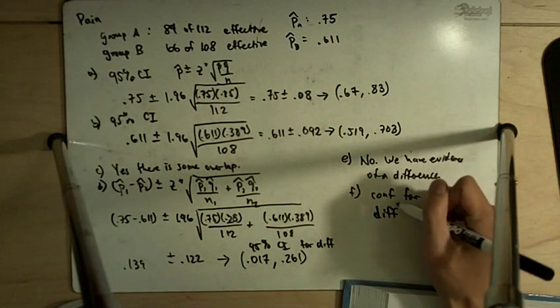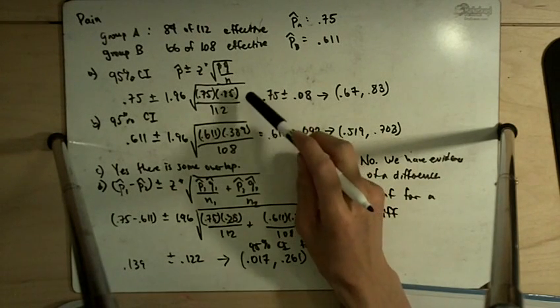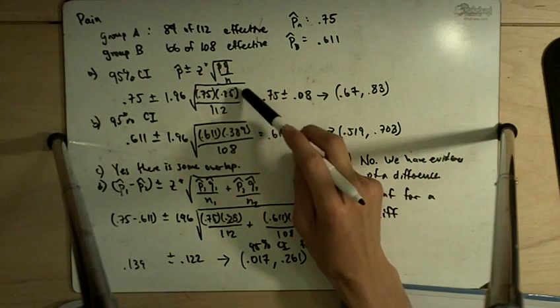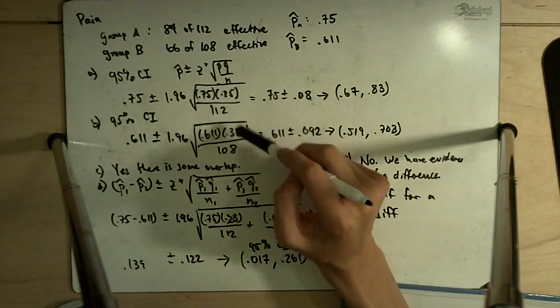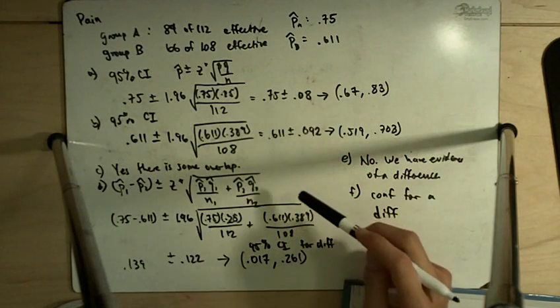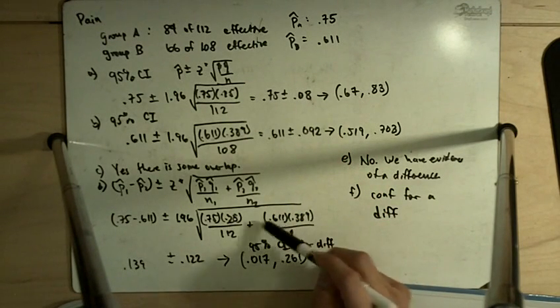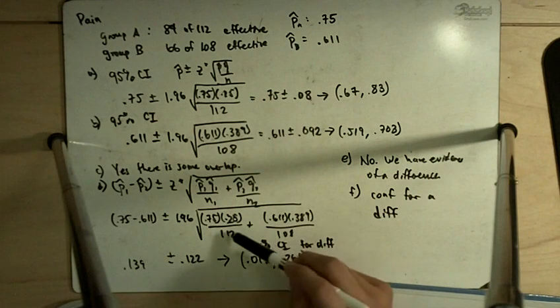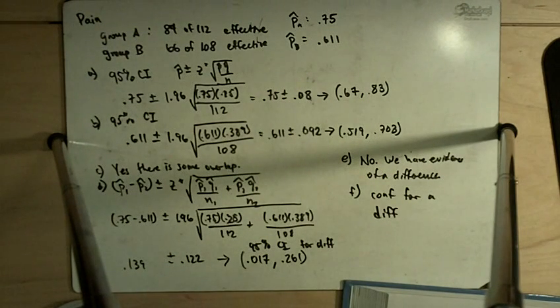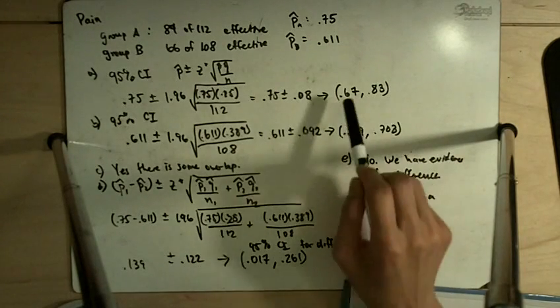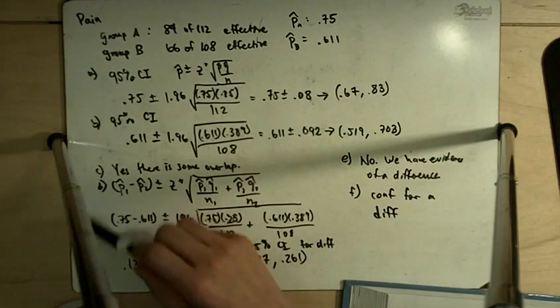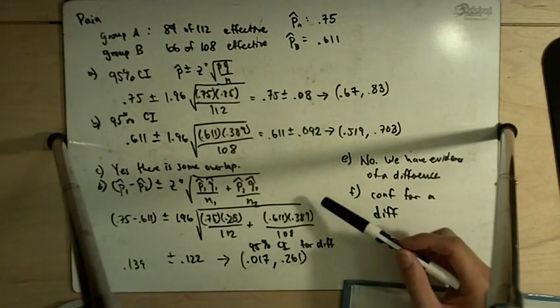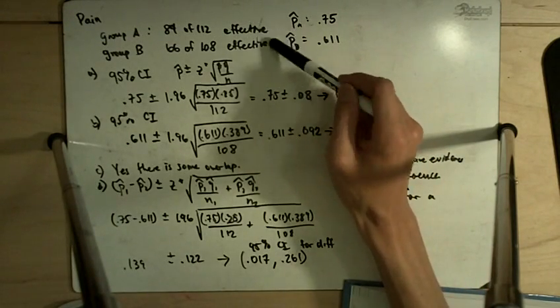And the reason is because Parts A and Part B take each standard error, this P hat Q hat over N, individually and separately. Over here in Part D, we're combining those two together through this formula. And if you try to just look at the confidence intervals by themselves, it's not going to work out that way. So the way we did it in Part D is the correct way when we are trying to compare two separate groups.